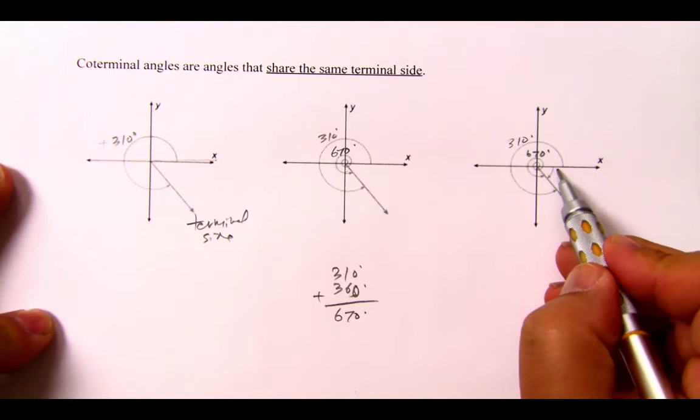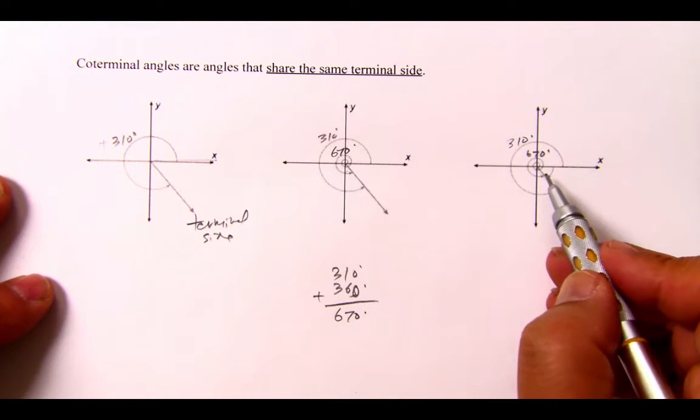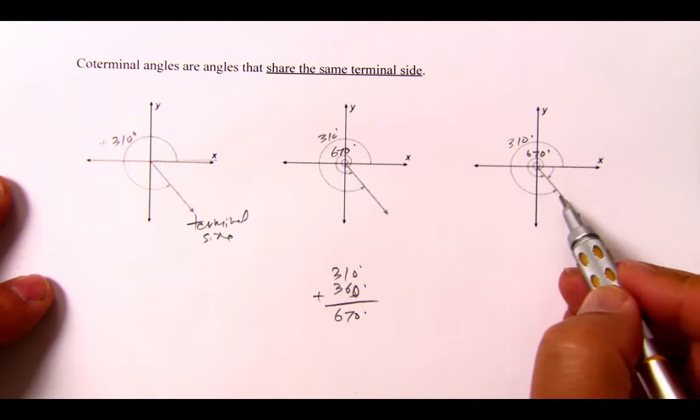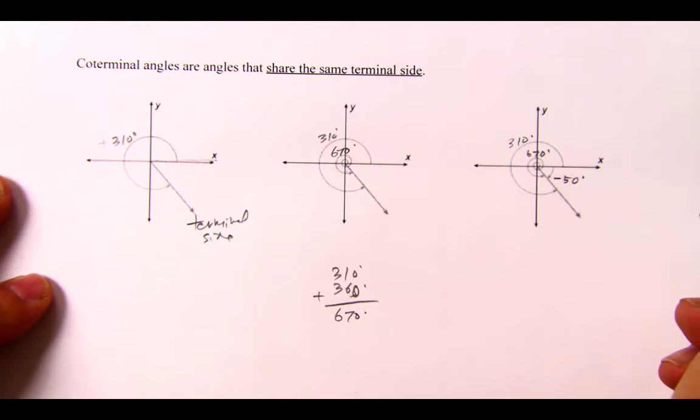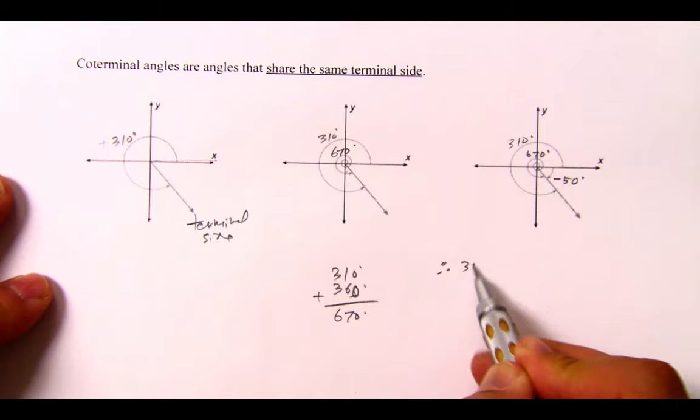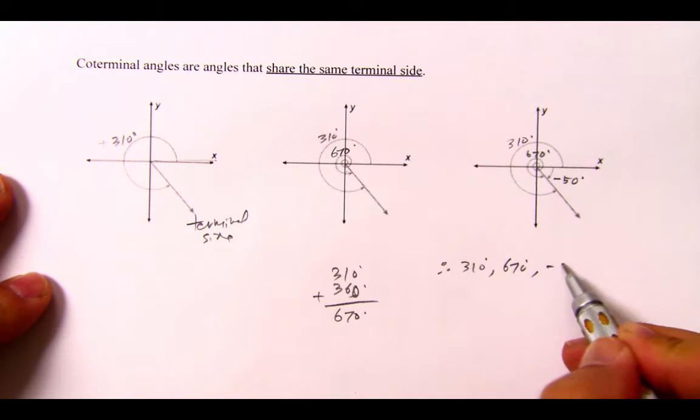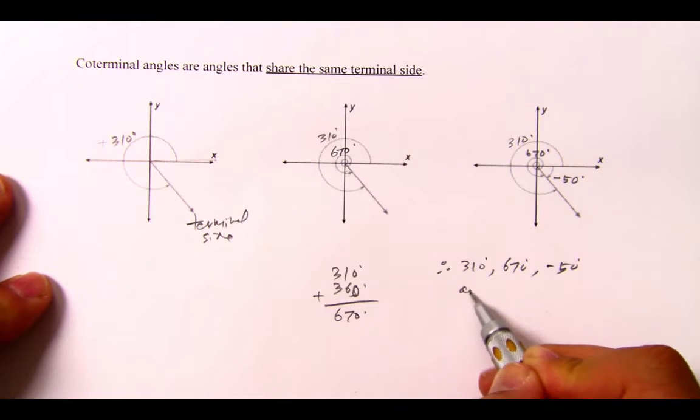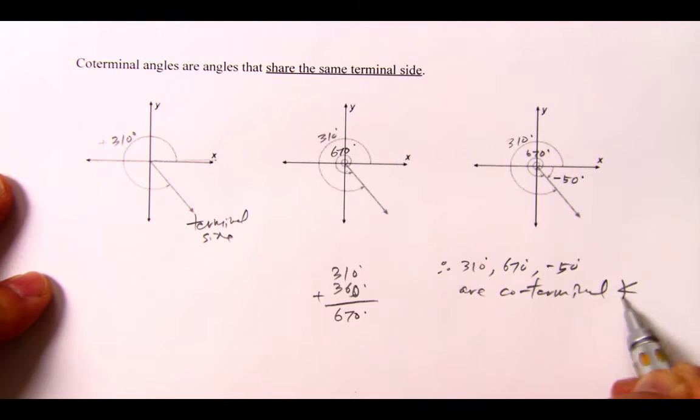But this one, unlike the others, is going from the positive x-axis clockwise until we meet here. So that one turns out to be negative 50 degrees. So basically we could say that 310, 670, and negative 350 are co-terminal angles.